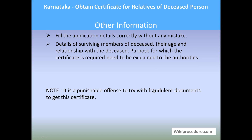Other information: fill in the application details correctly without any mistakes. Details of the surviving members of the deceased, their age, and their relationship with the deceased, as well as the purpose for which the certificate is required, must be explained to the authorities. Note: it is a punishable offense to use fraudulent documents to obtain this certificate. Hope this video helped you — don't forget to give us a like and subscribe to our channel for more such videos. Thank you for visiting wikiprocedure.com.